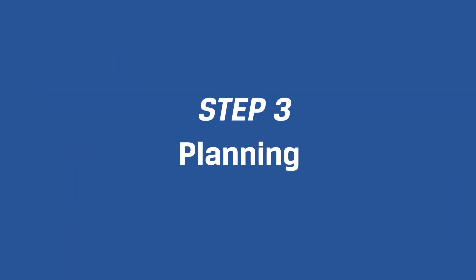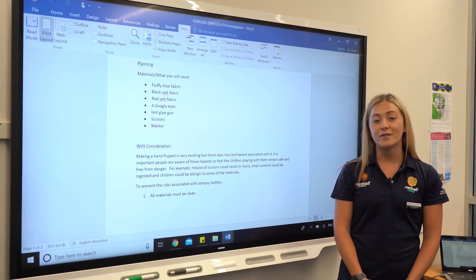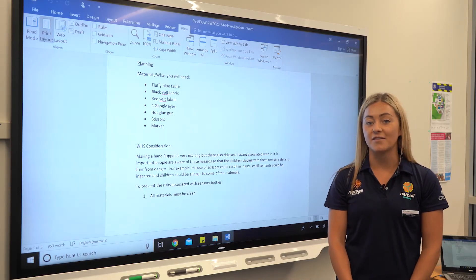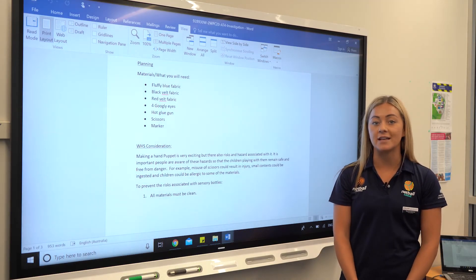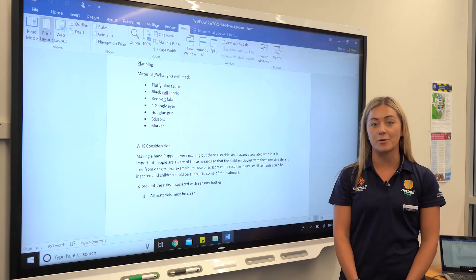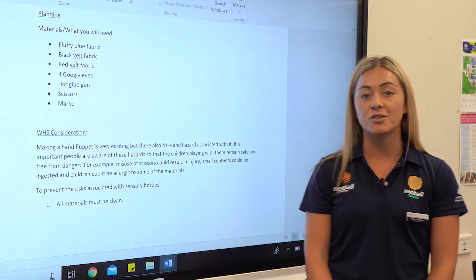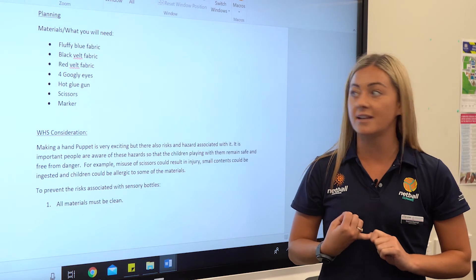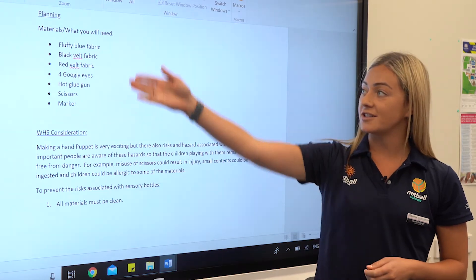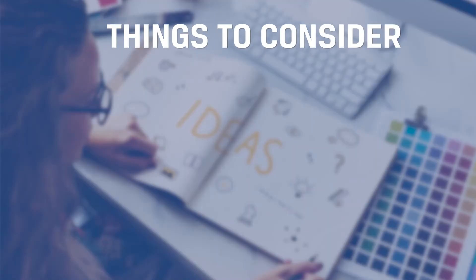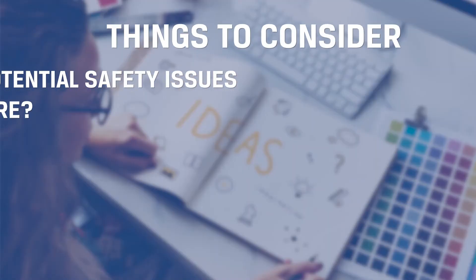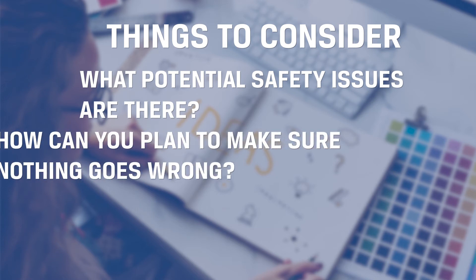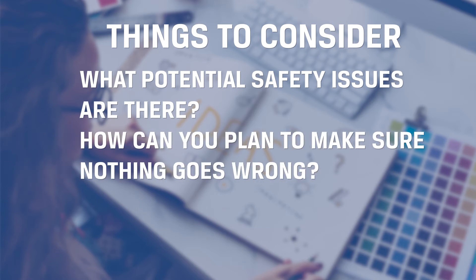Step three is planning. For this step, you're required to devise a very clear plan on how you intend to complete your practical task. Things you should include are all equipment and materials needed. You will also need to consider any work health and safety issues that you may come across and pre-plan so that nothing goes wrong.